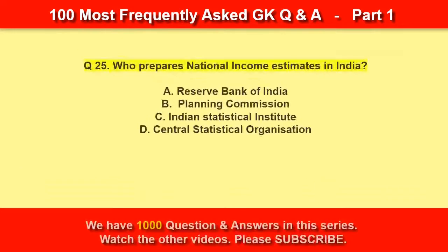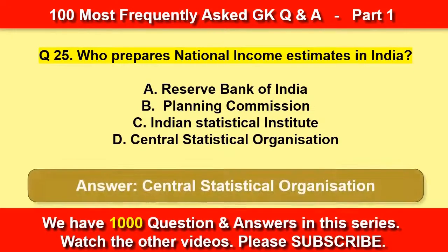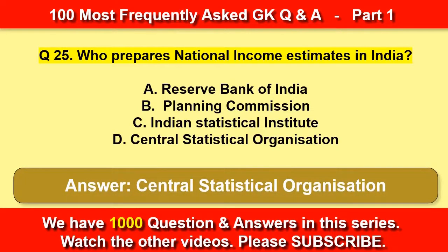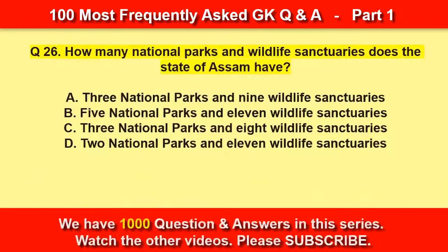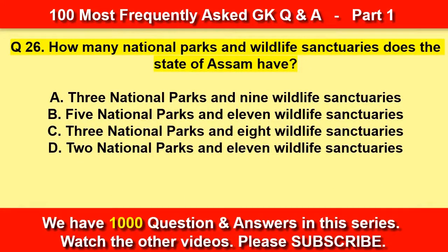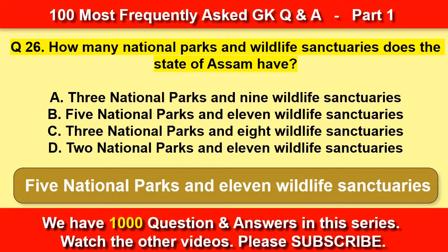Who prepares national income estimates in India? Central Statistical Organization. How many national parks and wildlife sanctuaries does the state of Assam have? Five national parks and 11 wildlife sanctuaries.